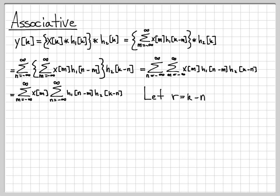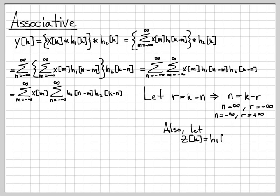We do a change of variable: let r equal k minus n. Rearranging, n equals k minus r. To rewrite the sum over n, we replace all n quantities: n becomes k minus r. For the limits, when n equals infinity, r equals negative infinity, and when n equals minus infinity, r equals positive infinity. We also define the quantity z as h1 convolved with h2, which will make our result cleaner.